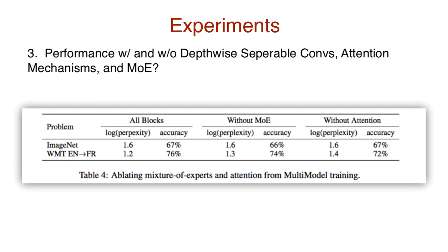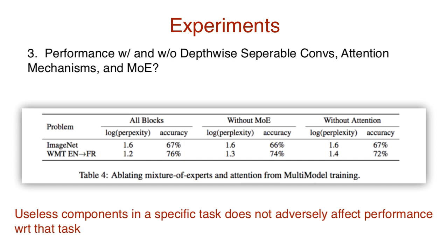Interestingly, note the removal of these blocks didn't affect the performance of these tasks specifically. So why is that result interesting? This shows that inclusion of even useless components in a network for a specific problem does not decrease the performance for that specific problem. So we can add components to this multi-model to improve the performance of task A without hurting the performance on another task B.